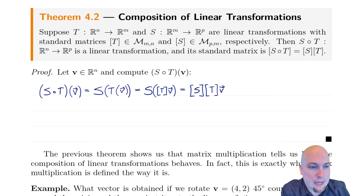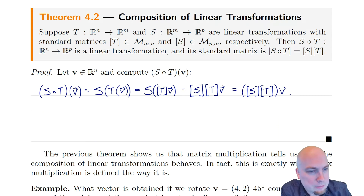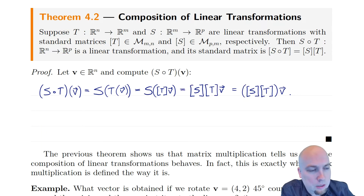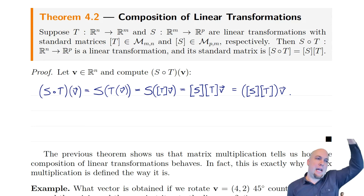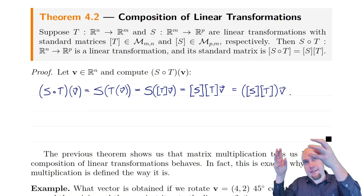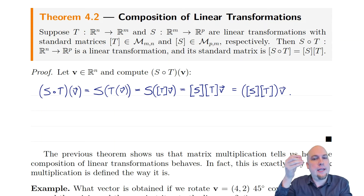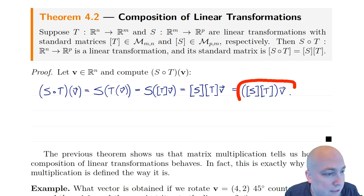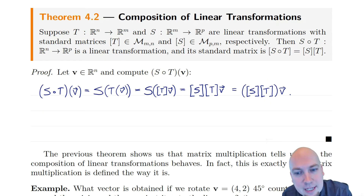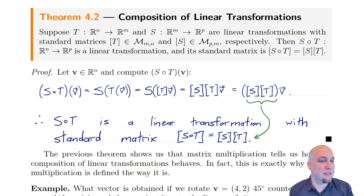Now we can do the same thing with S. S is a linear transformation applied to some vector, which is the same as the standard matrix of S multiplied by the column vector T times v. Then I add parentheses to highlight something: I'm going to think of this not as S times T times v, but as (S times T), which is just one unit, times v. So I've got some matrix times the column vector v, and that equals S composed with T applied to v. But our theorem about standard matrices says that every linear transformation has only one standard matrix — standard matrices are unique. So whatever matrix this is has to be the standard matrix of S composed with T. We're done just by uniqueness.